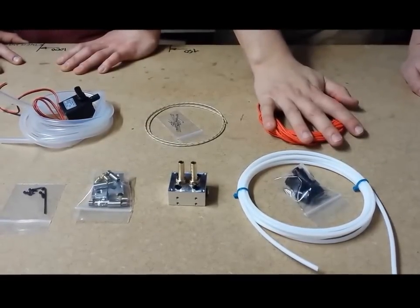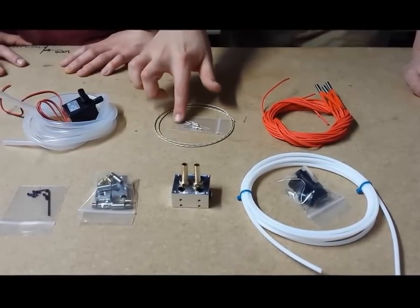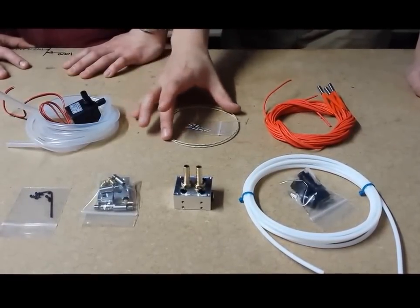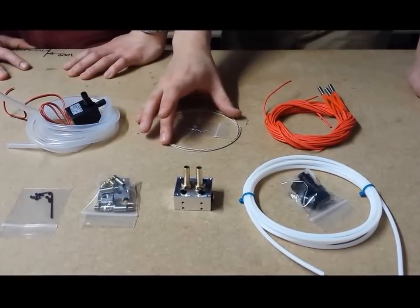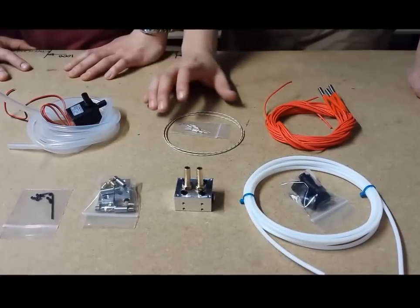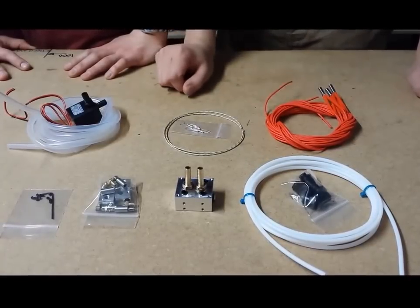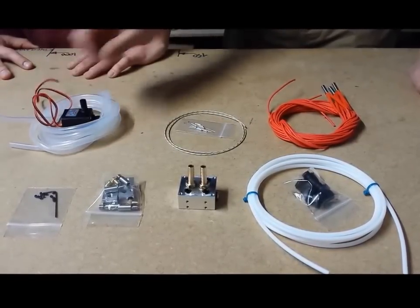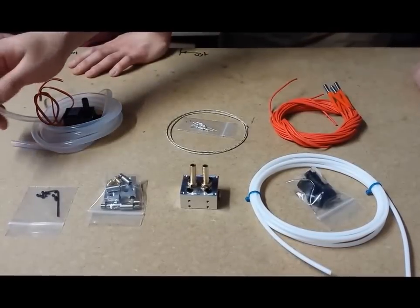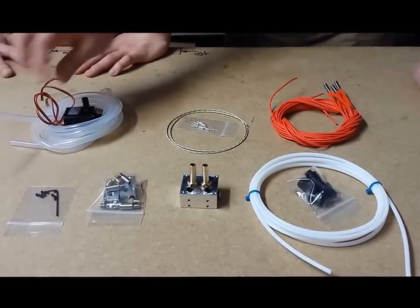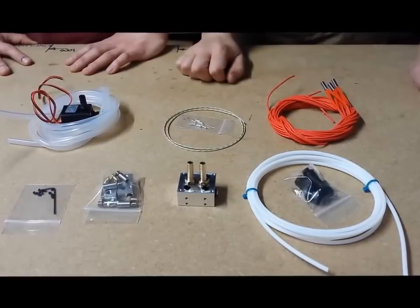You've got your four heater cartridges, you've got four thermistors and ferrules to connect them, you've also got this ultra high temperature wire to connect to your thermistors where the insulation won't burn, really handy stuff. You've also got your 12 volt submersible pump and you've got some silicon rubber tubing which connects the whole water cooling system together.